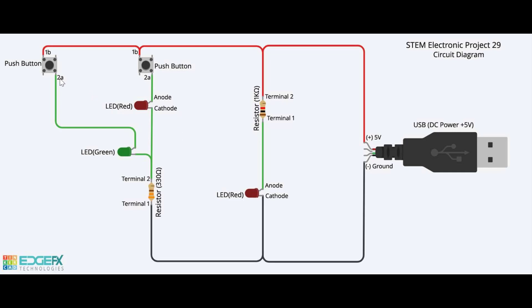When you press the push button in path 3, electric current flows from the positive 5V terminal of the USB, through the push button, then through the green terminal of the dual LED, then to the 330 ohm resistor to ground, completing path 3 and emitting green light. When you press both push buttons in path 2 and path 3, electric current flows from the positive 5V terminal of the USB through both paths, producing a unique colour that is the combination of red and green light.